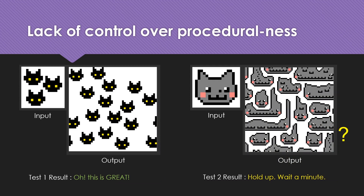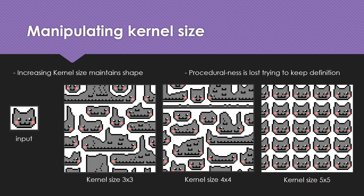There is however a problem with overlapping wave function collapse. The image on the left generates perfectly fine, but on the right, with some intricate shape in the input image, we lose detail in the output. We notice that we are losing control over the proceduralness as we increase kernel sizes when using overlapping wave function collapse.